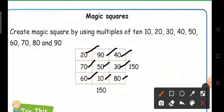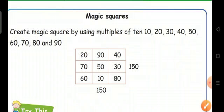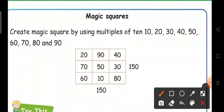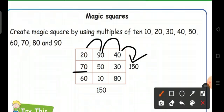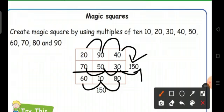So now we are going to put 150 on any side. So first let us now add 20 plus 90, 110, 110 plus 40, 150 and this row 70 plus 50, 120, 120 plus 30, 150 also and next 60 plus 10, 70, 70 plus 80, 150.